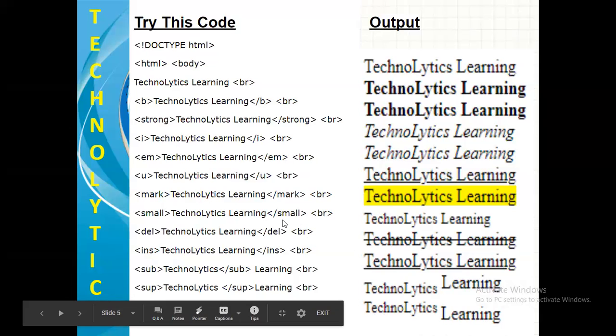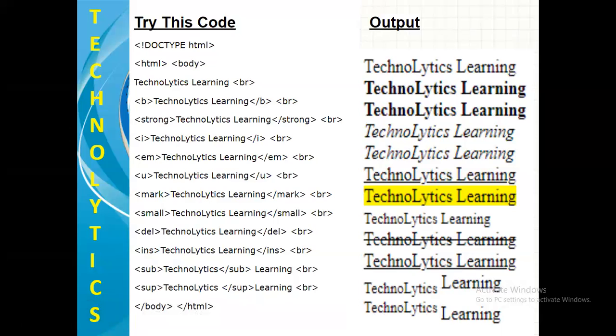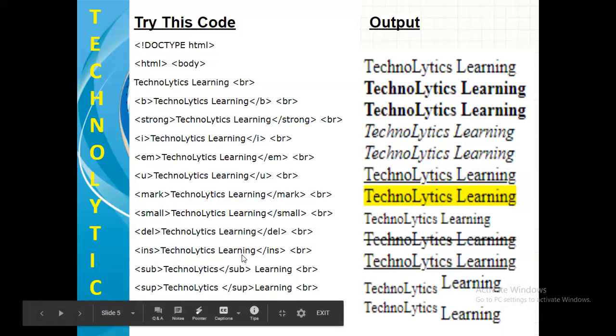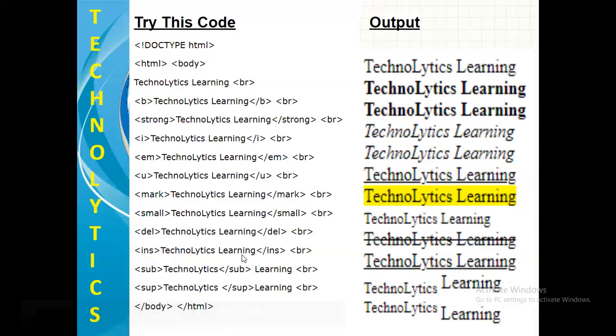Normal text. So, this is what the code which will explain the different various formatting tags of HTML. Let's try this using notepad and let's see it practically.